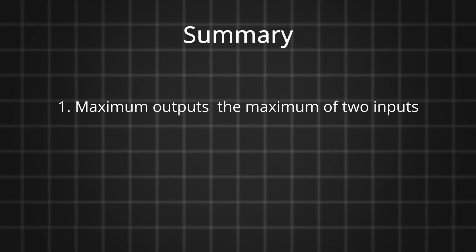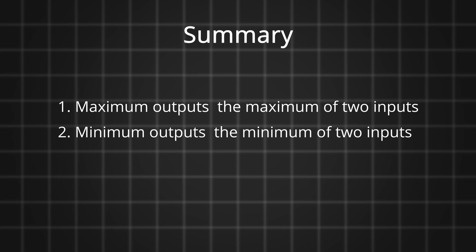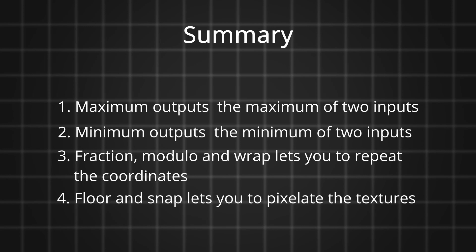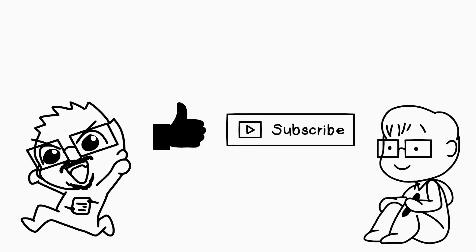To summarize: maximum outputs the maximum of two inputs while minimum outputs the minimum. Fraction, modulo, and wrap let you repeat coordinates, while floor and snap let you pixelate them. If you found this useful, give the video a like and subscribe for more content. Thanks for watching — I'll see you in the next video.